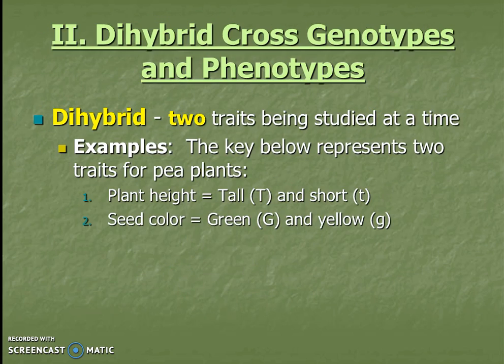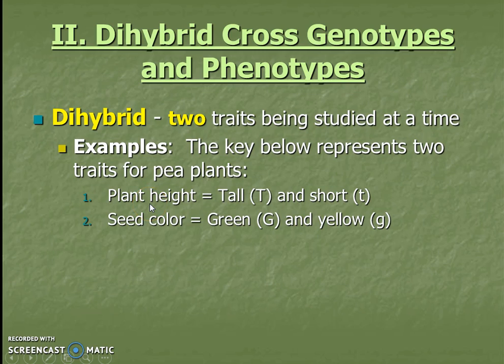Now let's talk about dihybrid crosses. When we think about dihybrid, we need to remember that the prefix 'di' means two. So this means we're talking about multiple traits at once, versus what Mendel did which is mono — one trait at a time. We can deal with this in a similar pattern as other genetic situations; we just have to read the questions very carefully. Here's an example and a key we're going to use — remember keys are really important, especially now.